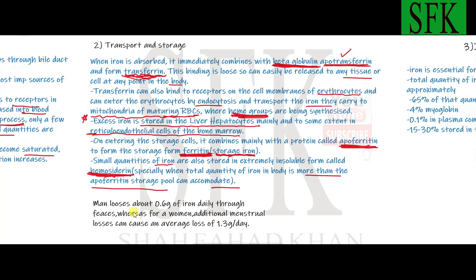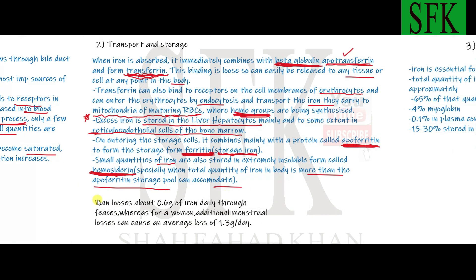An important fact: males lose approximately 0.8 grams of iron daily through feces. Women have additional losses through menstruation, giving an average loss of about 1.3 grams per day. Women therefore lose more iron per day than males and need to supplement by taking iron supplements.